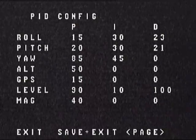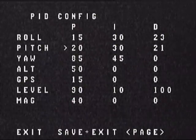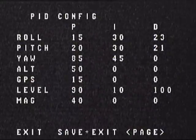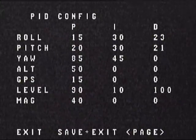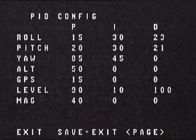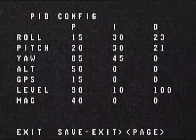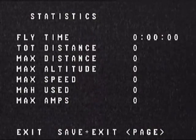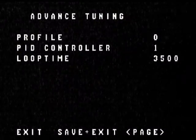When you exit, you exit on 'save exit' — if you just exit without saving, it's not going to save. To go to the next page, go down to 'page' and move the rudder left or right to change pages. You can turn things on, turn things off, or change values.